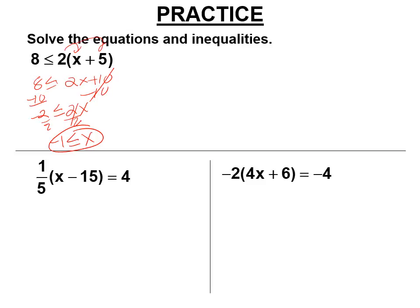Distribute a 1 fifth. 1 fifth x. 1 fifth times 15 is 3. So this is minus 3. Now I'm not clearing this fraction because it's just a fraction coefficient. I'm adding 3 to both sides. 1 fifth x equals 7. Multiply both sides by the reciprocal, 5. x equals 35.